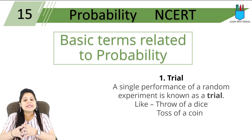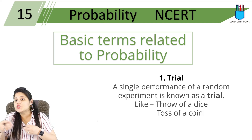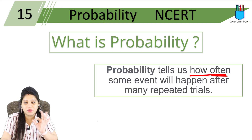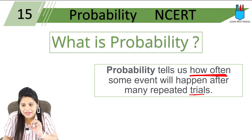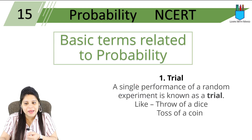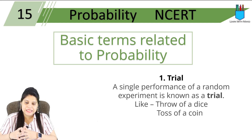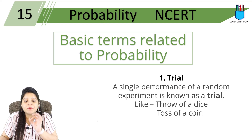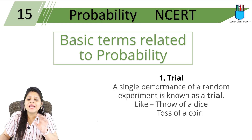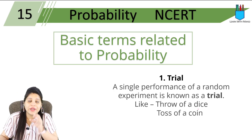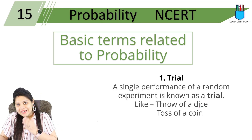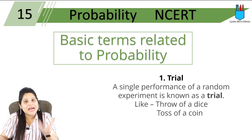Next, basic terms related to probability. In this chapter, we will discuss some basic terms as we discussed earlier. There was a word called trial, and a word called event — I will explain all these words. When we talk about a trial: a single performance of a random experiment is known as a trial. Like the throw of a dice or the toss of a coin — so this is a trial.